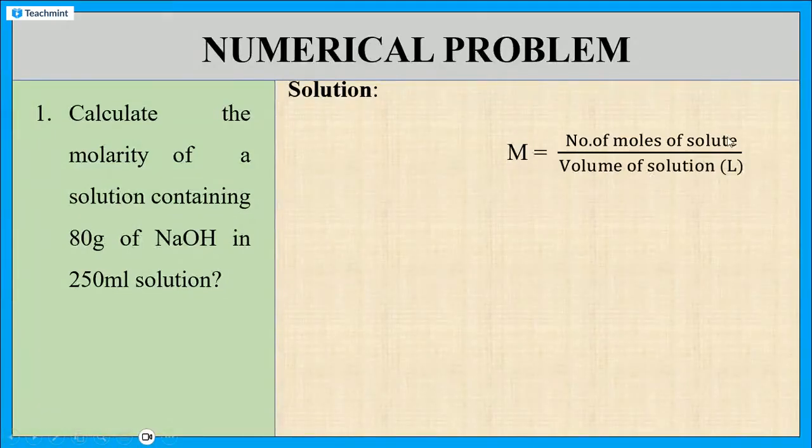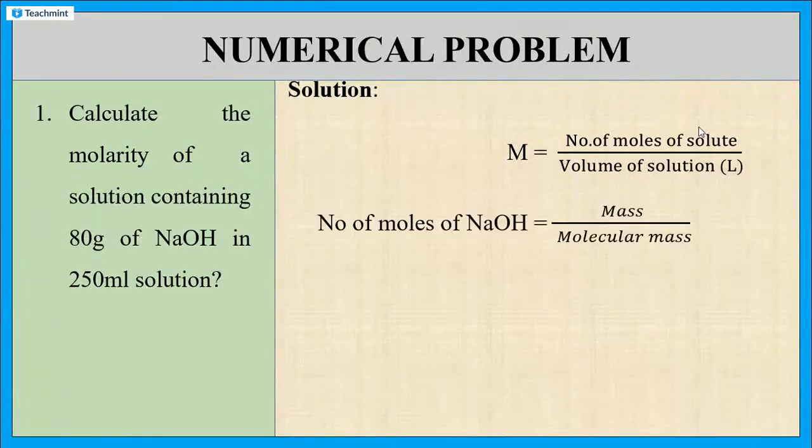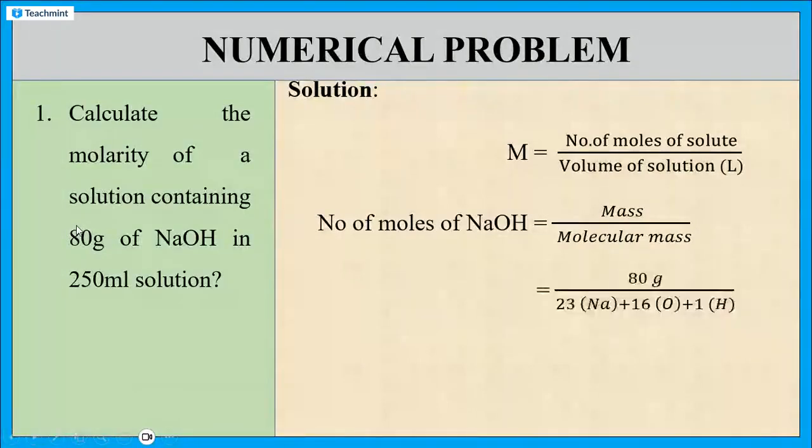First we need the number of moles of solute. For that we have the formula: number of moles of sodium hydroxide equals mass of sodium hydroxide divided by molecular mass of sodium hydroxide. Mass of the sodium hydroxide is given in the problem. Now, we need the molecular mass of sodium hydroxide. How to calculate the molecular mass of sodium hydroxide?